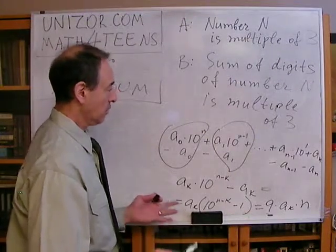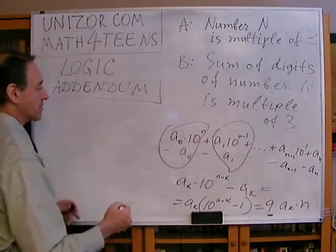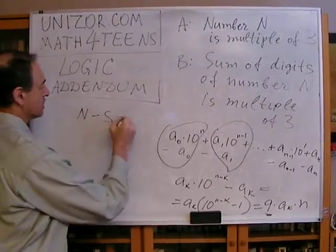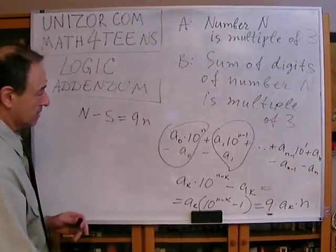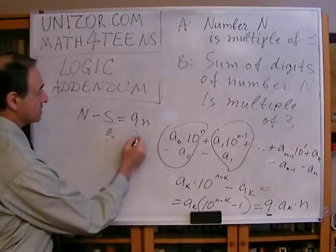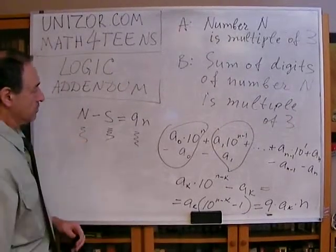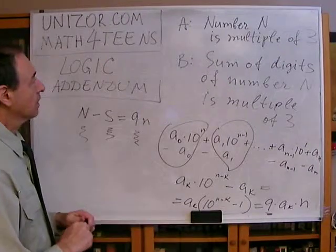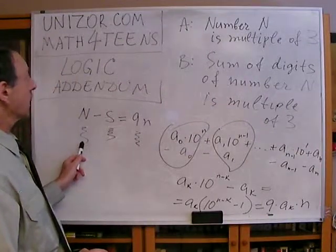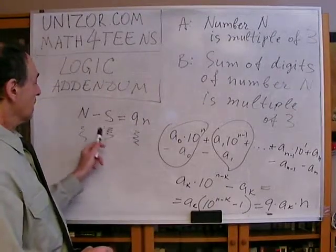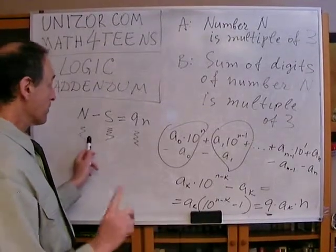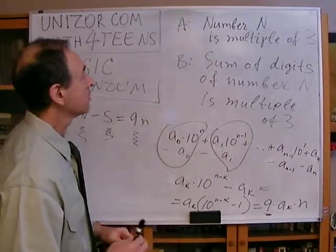What does it mean? If you have a number N and subtract the sum of its digits, you get something divisible by 9 and by 3. That means the divisibility of the number and the divisibility of the sum of its digits must always be in sync. If the sum of digits is divisible, the number should be divisible. If the sum is not divisible, the number is not divisible. And by the way, this is not only for 3, but also for 9.